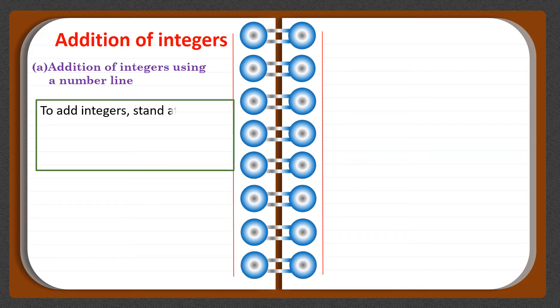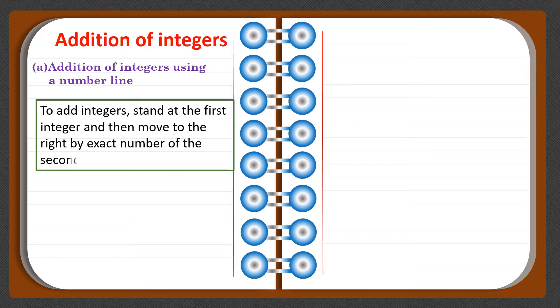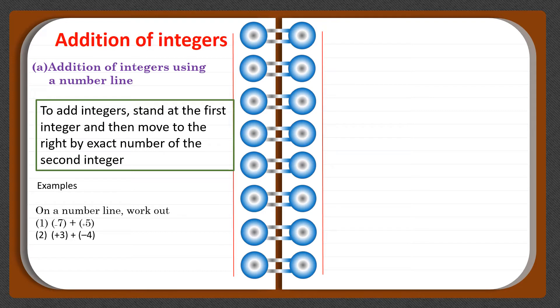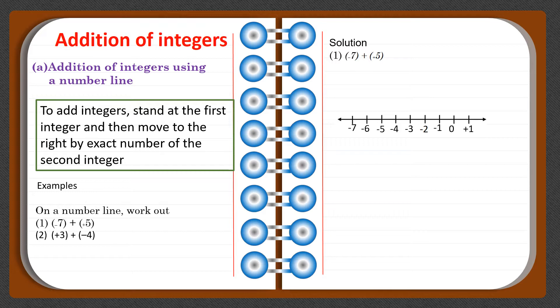When you are given integers to add, you stand at the first integer and then you move to the right by the exact number of the second integer. We move to the right generally because we have a positive number, but you may also have a case where you move to the left, depending on the type of integer given. Let's look at these examples: minus seven plus positive five, and plus three plus minus four.